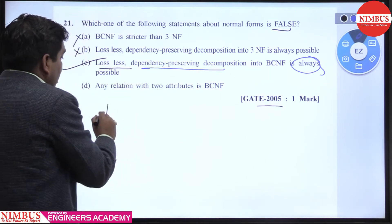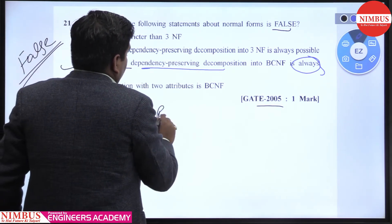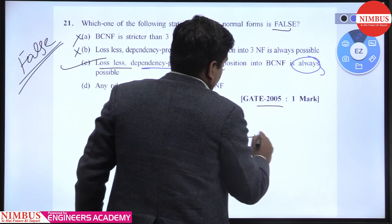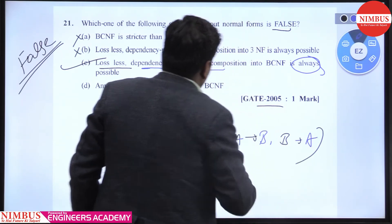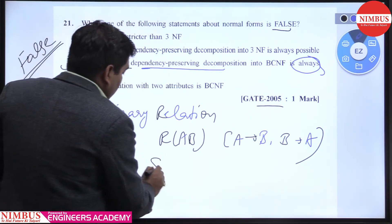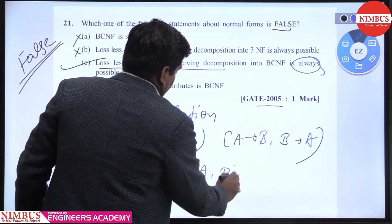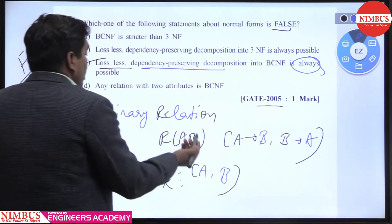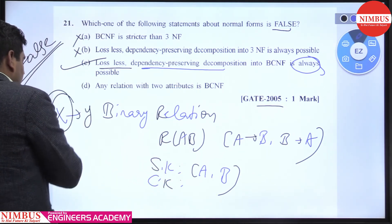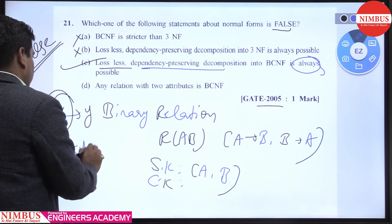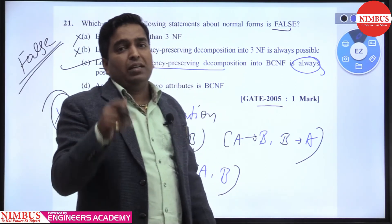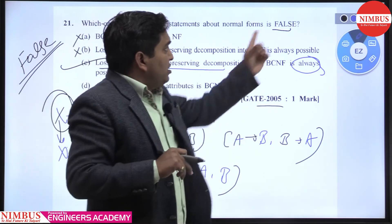Any relation with two attributes — a binary relation — is always in BCNF. With two attributes, the only functional dependencies are A → B or B → A. It is always in BCNF because here the super keys are either A or B, which are also candidate keys. So in every non-trivial FD X → Y, X is a super key. That is why a binary relation is always in BCNF. A relation with three attributes is also in BCNF, but that option is not given here.